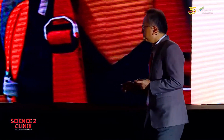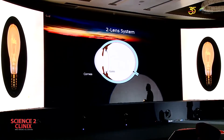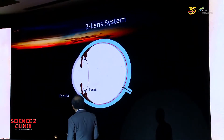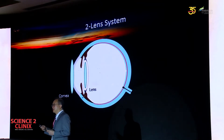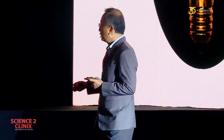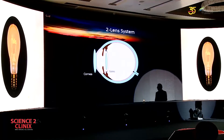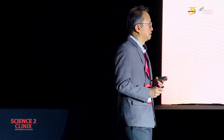The eye is essentially a two-lens system. We all know there's a cornea and then there is the lens. In cataract surgery, we are essentially exchanging the lens from a normal crystalline lens or an opaque crystalline lens to an artificial lens. The cornea contributes two-thirds and the IOL contributes one-third of the refractive power of the eye.